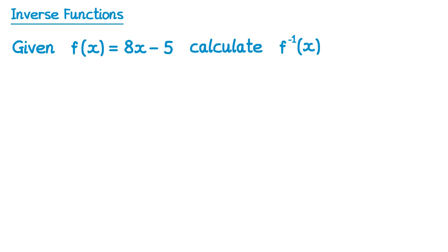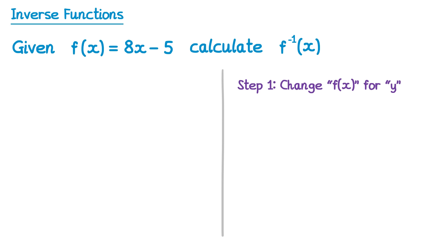In your exam you may be given a function and asked to work out its inverse. There is a method that works well for this, so you don't have to draw out function machines each time. The first step is to write out the function and change the f(x) for a y. So the function here is f(x) = 8x − 5, and we replace f(x) with y.